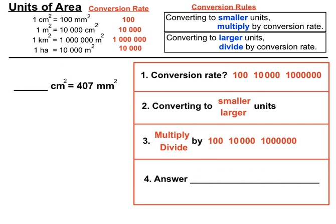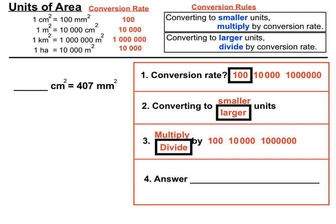Example two: convert 407 mm² to cm². We're again using that conversion rate of 100 between square centimetres and square millimetres. This time we're converting to bigger units, so we divide by 100. When you divide by 100, you move the decimal point two spots to the left. The decimal point at the end of that whole number moves two spots left, giving us 4.07 cm².